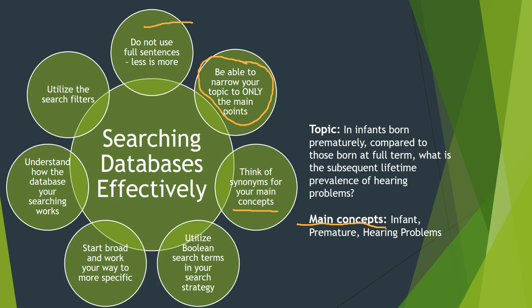The next tip is to utilize Boolean search terms in your search strategy, and we're going to go over this next as well. Boolean search terms are AND, OR, and NOT. For this topic, it would be: infant AND premature AND hearing problems. And combining that with synonyms, it could be: infant OR newborn AND premature AND hearing problems OR deafness, for example.